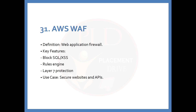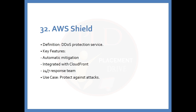The 31st service is AWS WAF (Web Application Firewall). Key features include blocking SQL injection and XSS attacks, a rule engine, and Layer 7 protection. The use case is securing websites and APIs. The 32nd service is AWS Shield. The definition is: a DDoS protection service. Key features include automatic mitigation, CloudFront integration, and a 24/7 response team. The use case is protecting against attackers.